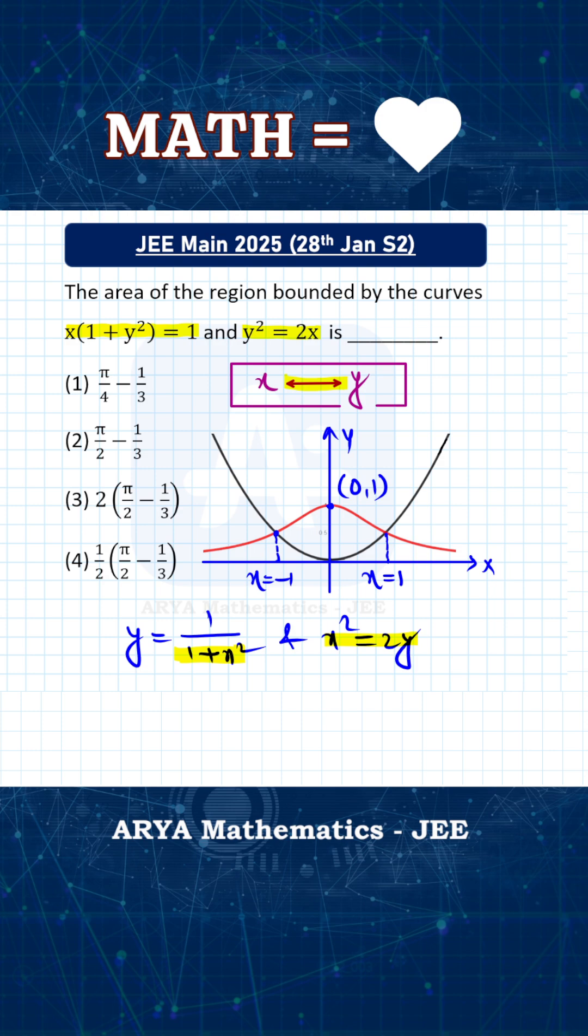So now we need the area bounded between these two curves, the red one and the black one, between x equals to minus 1 to plus 1. Now because both of these graphs are symmetric about y axis, instead of finding the area from minus 1 to 1, we can calculate the area from 0 to 1.